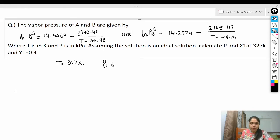What we do is just substitute the value of temperature here so we can get the value of ln(P_A^s) and P_B^s. Just substitute the values in the given relation. So ln(P_A^s) = 14.5463 - 2940.46/(327 - 35.93).